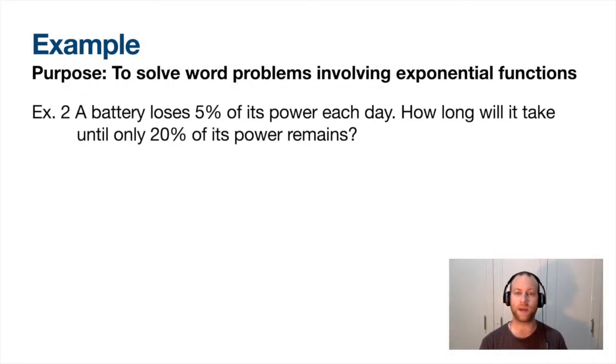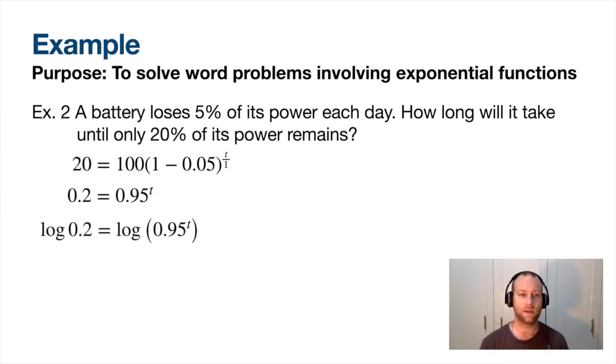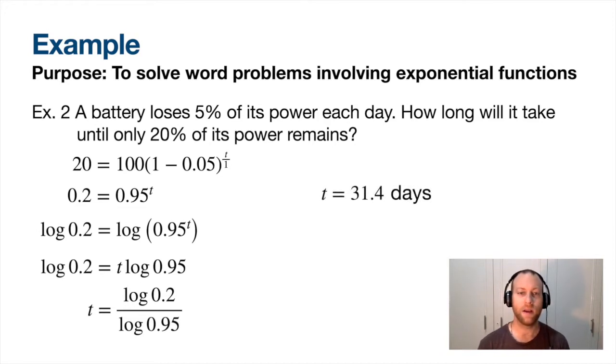We've got a battery that loses 5% of its power each day - notice each day meaning n is 1. How long does it take until 20% remains? I want the future value to be 20 and the initial value is 100. I start off with 100%. My rate is 5% but I'm subtracting it because I'm losing that amount. Do algebra, take a log, bring the t out front, divide by log, plug that in your calculator. Notice days - the unit for this is days, not years. That'd be a great battery if it lasted for years.